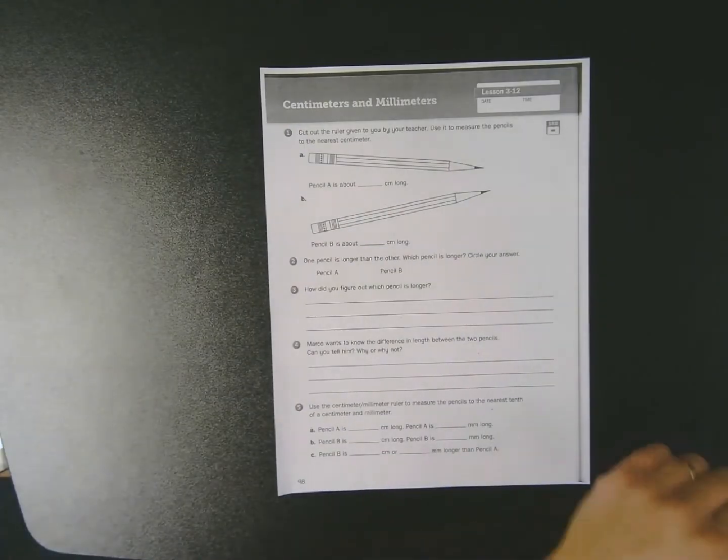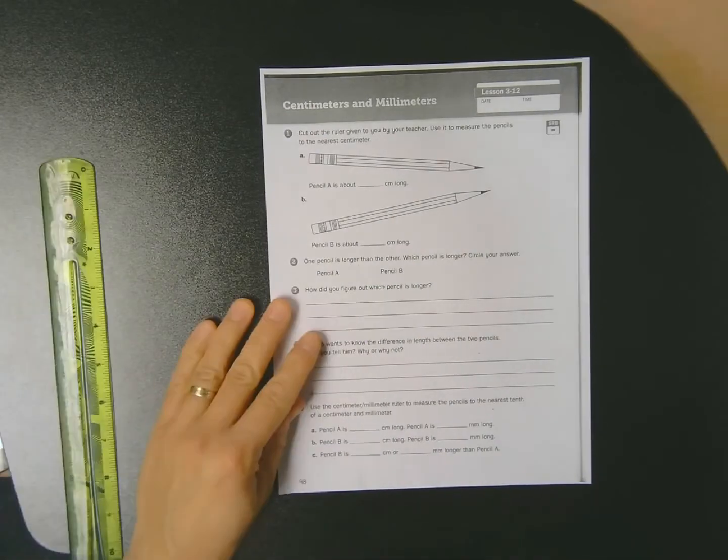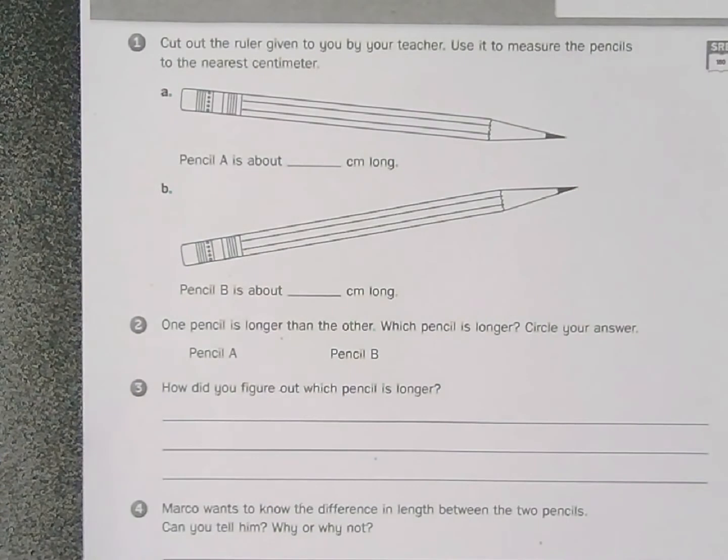This is my math journal but I'm actually going to use a photocopy because it's going to lay flat on my surface a little bit easier, and since I'm going to be doing some measurement that will be a little bit more advantageous. Now if you take a look at the instructions at the top of your page, it says cut out the ruler given to you by your teacher, use it to measure the pencils to the nearest centimeter.